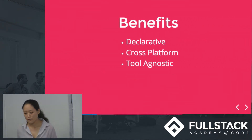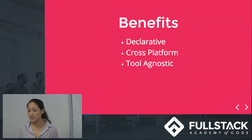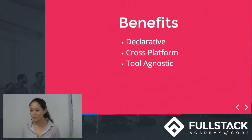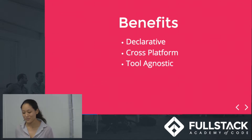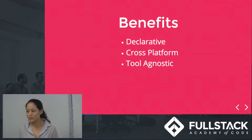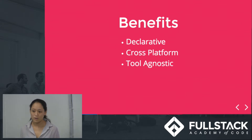What are the benefits of A-Frame? It's declarative because it's based on top of HTML, which is easy to use and understand. It's cross-platform — it's VR, but it works on your standard desktop and smartphone. And it's tool-agnostic, so it's unopinionated, meaning web developers can use their popular tools, libraries, and frameworks. For us it might be React; for someone else it might be Angular.